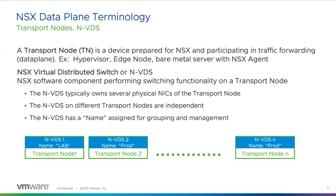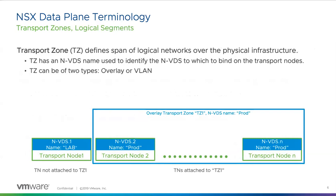The NVDS name is assigned for grouping and management purposes. One good tip: include those NVDS names in your documentation. So then we have transport zones — the transport zone defines the span of a logical network. We can have two different types of transport zones in NSX-T.